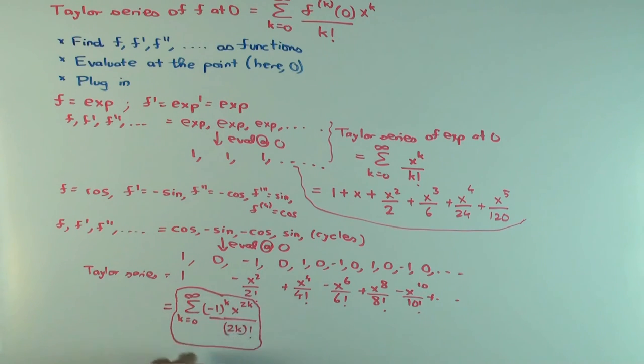You could do many other examples just like this. If you did sine instead of cosine, what would happen? How will it be similar to cosine? We will have all the odd power terms.